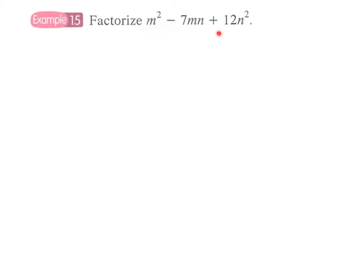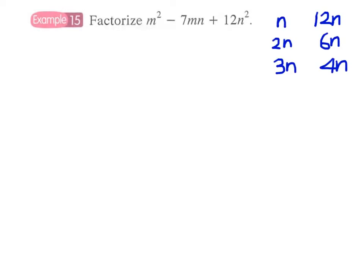Finally, the last example is a bit more difficult, but we can simply apply the clause method in the same way. The only difference is the last term is not the constant term — it's plus 12n². We have to make up the middle term of minus 7mn. The first three pairs are: n times 12n, 2n times 6n, and 3n times 4n, because we have a plus sign here, so we initially consider only positive terms.